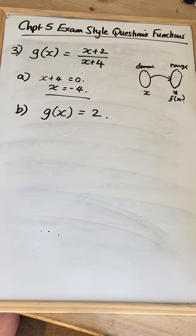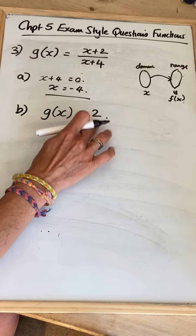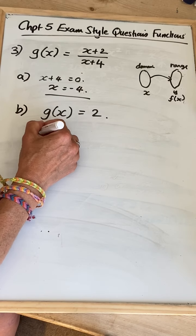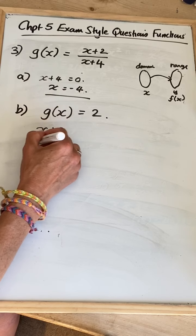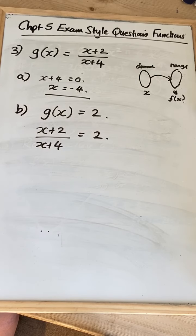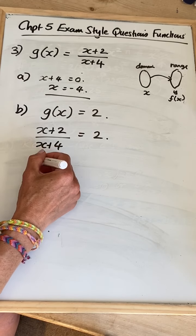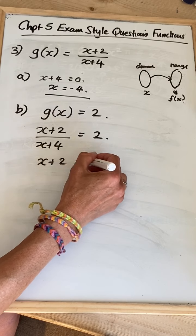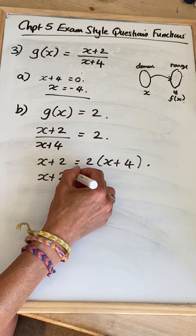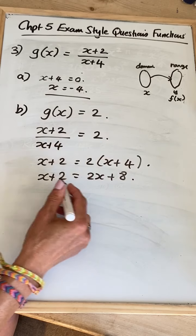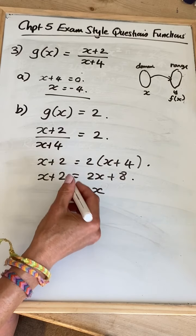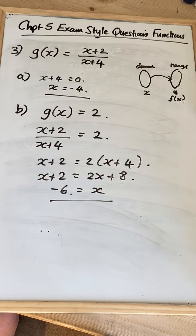That's a good general rule for functions expressed in fraction form — your denominator cannot equal zero. If that was a quadratic denominator, there'd probably be two x values you would have to exclude from your domain. Then part B of the question, we're just solving it. g of x equals 2 — remember, this doesn't mean substituting x equals 2; it says g of x equals 2. So (x+2)/(x+4) equals 2. Multiply both sides by (x+4), multiply out the bracket, subtract x from both sides, subtract 8, and x equals minus 6.